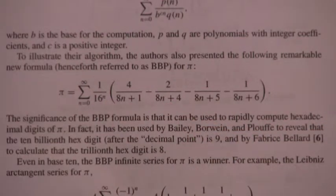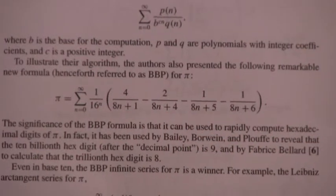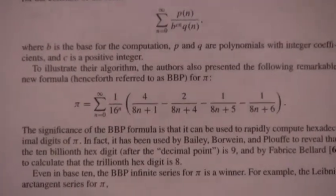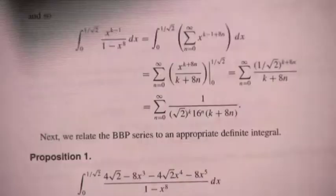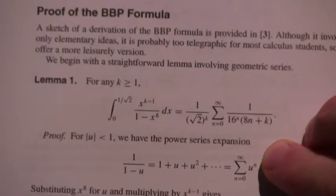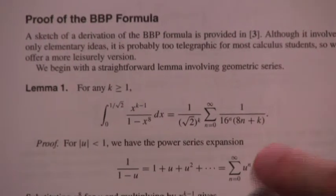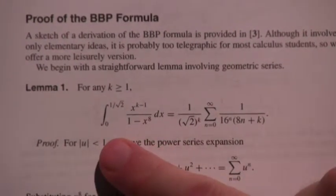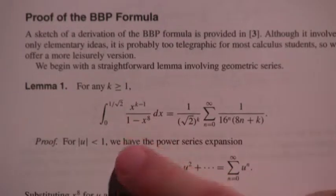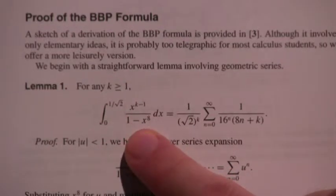And then what Kali does is introduce a similar concept to what we just looked at. And I want to get that in here. She introduces this integral, the integral from 0 to 1 over root 2 of x to the k minus 1 over 1 minus x to the 8th. Now, this seems like a strange integral to suddenly introduce, right?